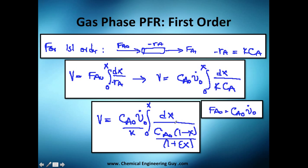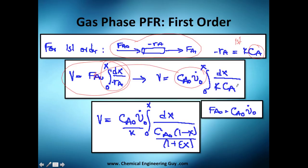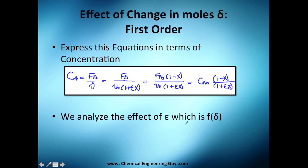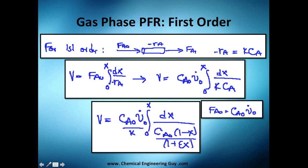For our plug flow reactor with first order kinetics, the design equation is: volume equals F_A0 times the integral that depends on the rate of reaction. We substitute the concentration expression into the rate. Unlike the liquid phase case where we only substituted the molar flow term, here we also need to apply the correction for volume change. Under the differential you'll see a fraction — note that this term is dividing and another is multiplying, since division by a fraction becomes multiplication.